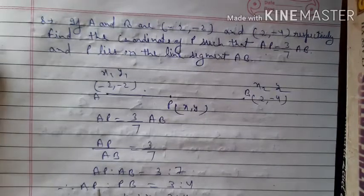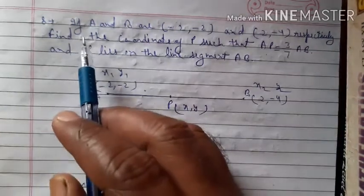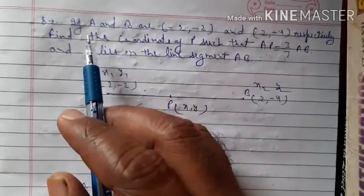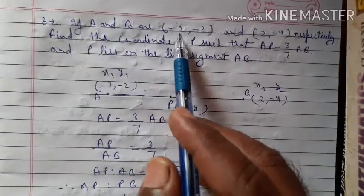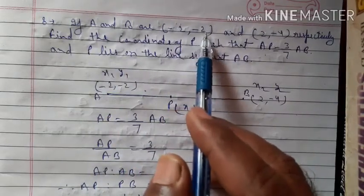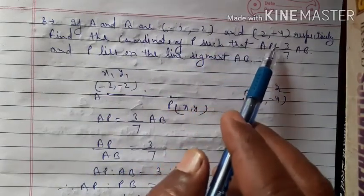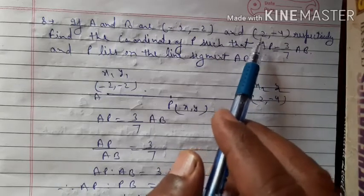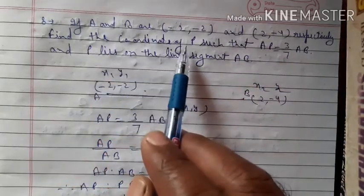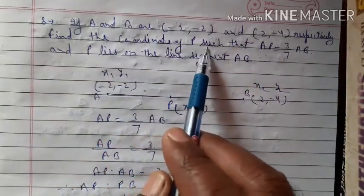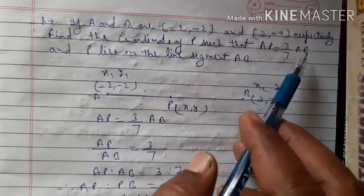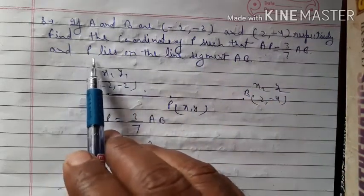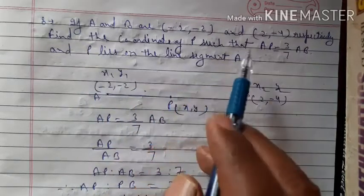Let us start question number 8 of exercise 7.2. If A and B are (-2, -2) and (2, -4) respectively, find the coordinate of P such that AP is equal to 3/7 AB and P lies on the line segment AB.